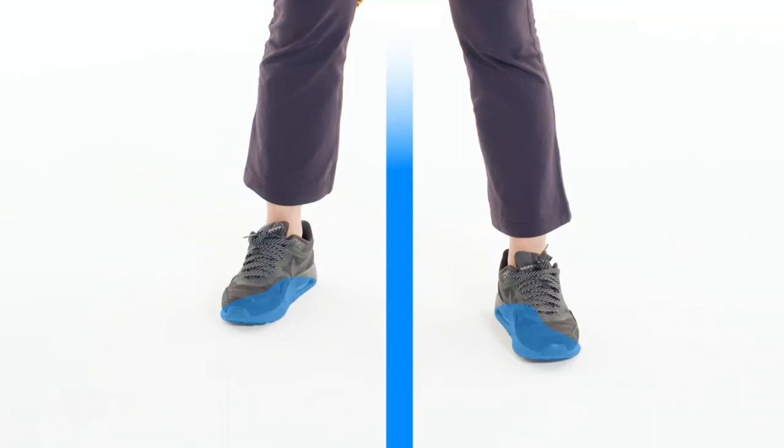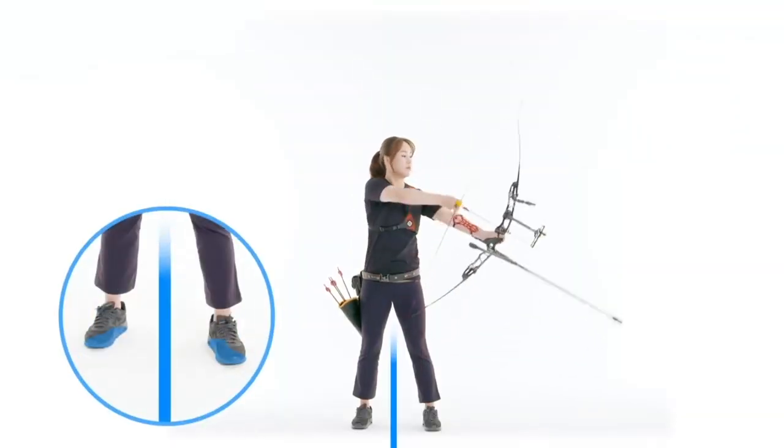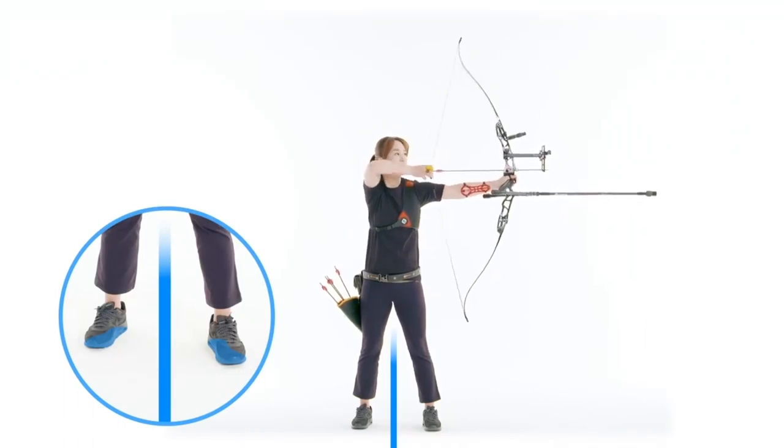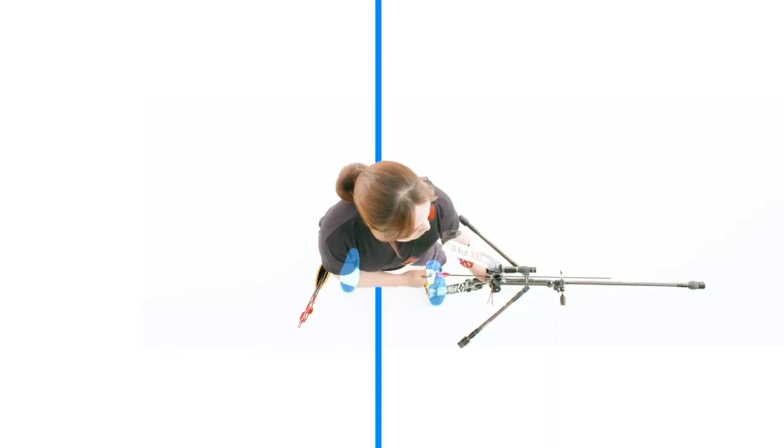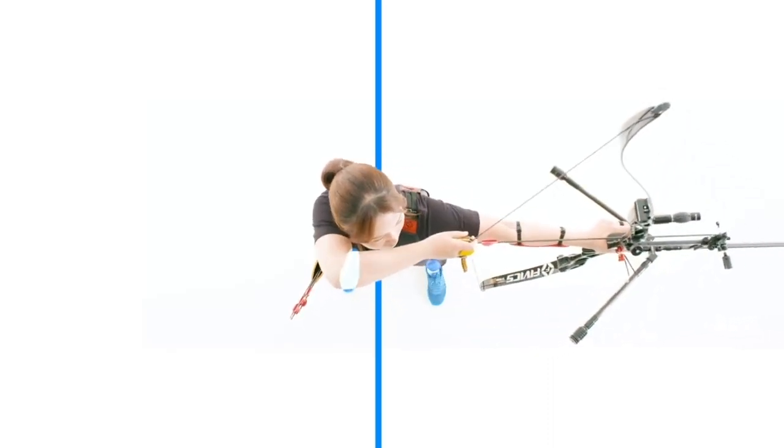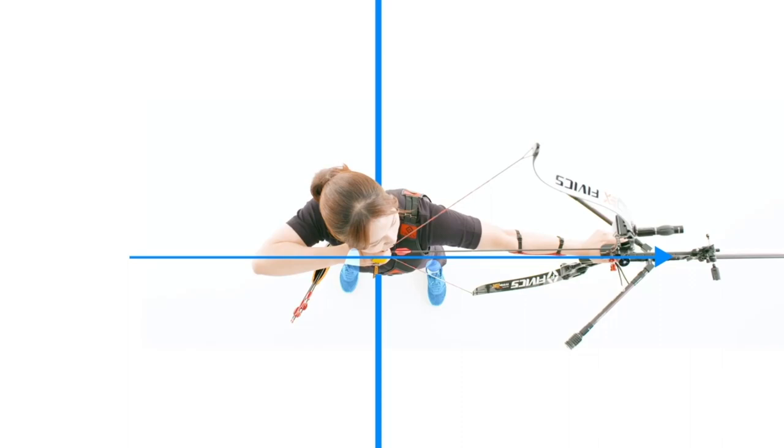Ideally, even before drawing the string, the archer's weight should be balanced between both feet. In the setting up phase, their shoulders should remain aligned with their hips to avoid any movement or instability when drawing the string.